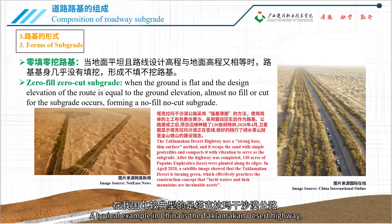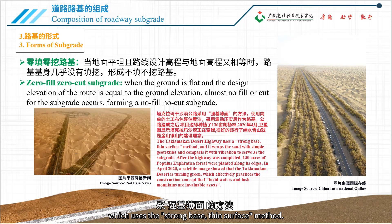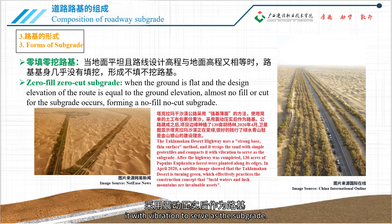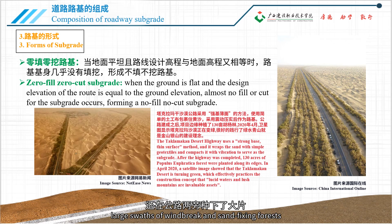A typical example in China is the Taklamakan Desert Highway, which uses the strong base, thin surface method. It wraps the sand with simple geotextiles and compacts it with vibration to serve as the subgrade. To withstand the sand, large swaths of windbreak and sand-fixing forests have been planted along the highway.